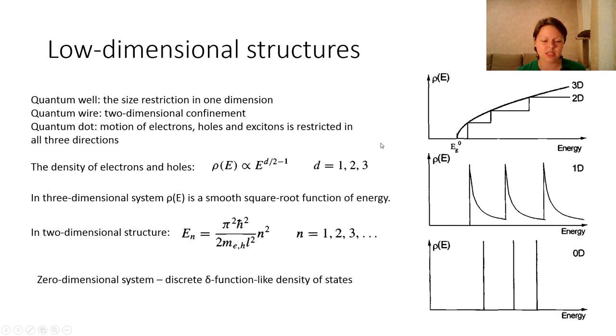At the same time, in the case of two-dimensional and one-dimensional systems, a number of discrete sub-bands appear due to the quantum confinement effect. The density of electrons obeys this equation within every sub-band.